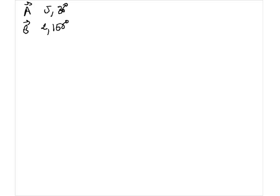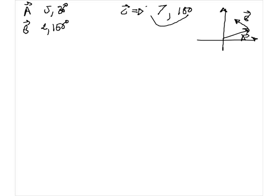This is called the component notation. At first sight you might think that all you have to do to add them up is add up all the magnitudes together and add up all the directions together. Let's try it: if I add 5 and 2, I get 7, so the magnitude of vector C would be 7, and the direction would be 180. But as we plot this, we realize A was around here, B was around here, and if we plot this C by just adding the two magnitudes and the two directions, we end up with 7 at 180 degrees, which obviously is not the vector we obtained previously. So we can't do that.